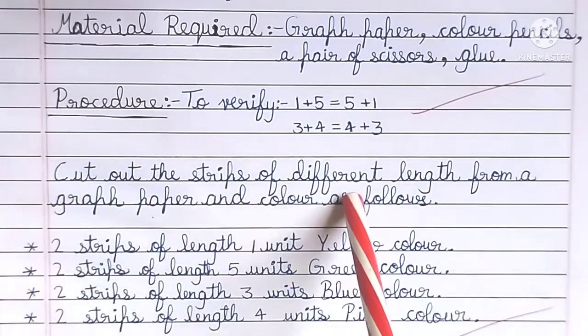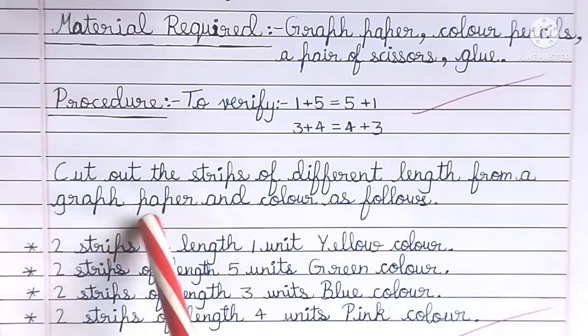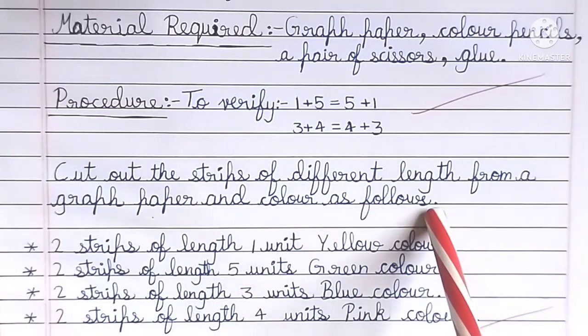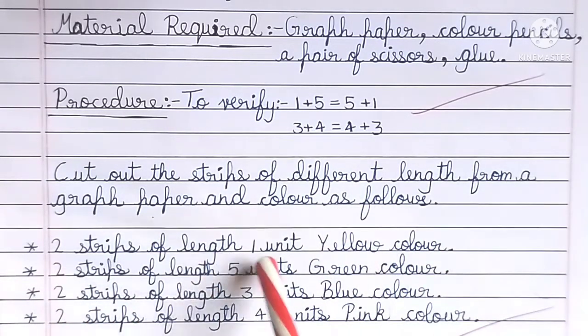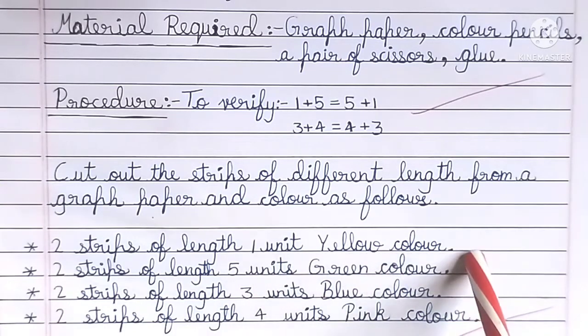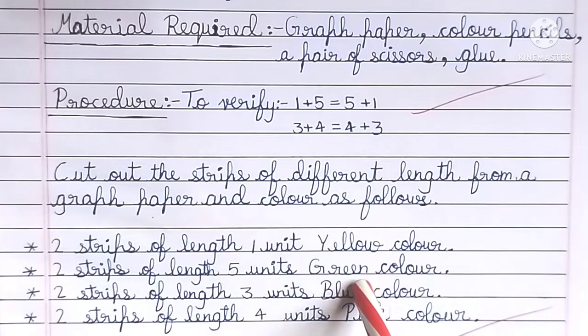Cut out strips of different lengths from graph paper and color as follows: 2 strips of length 1 unit yellow color, 2 strips of length 5 units green color.